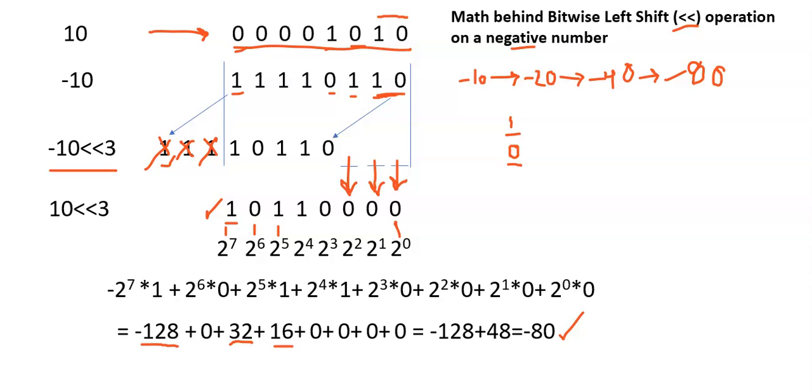And the another problem is, whenever bit values exceed the register size, then we get incorrect values. These are the two problems. First problem is, sign may change, either positive number can be converted into negative number, or negative number can be converted into positive number.